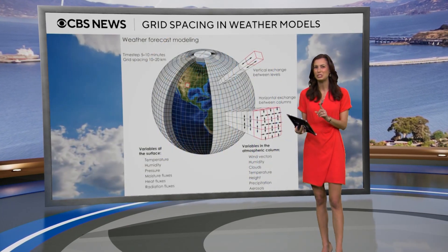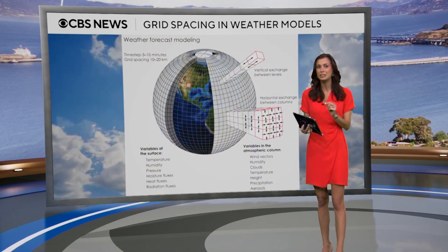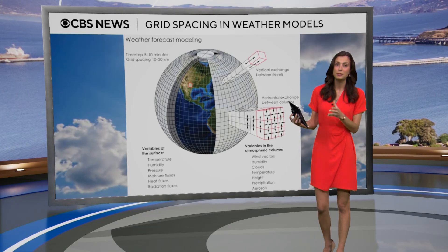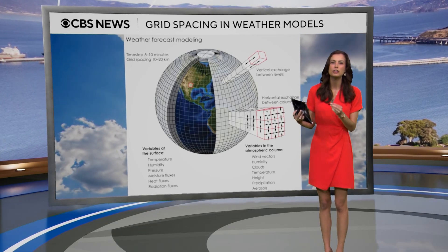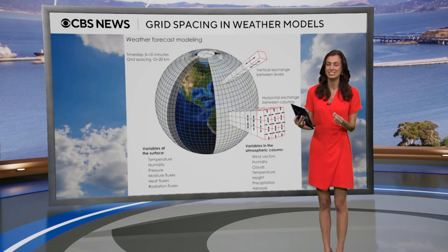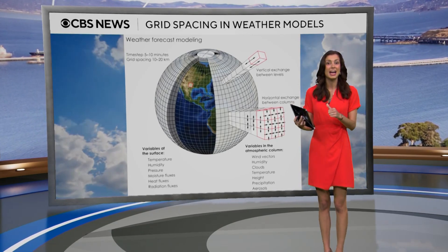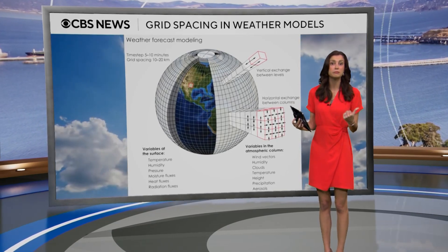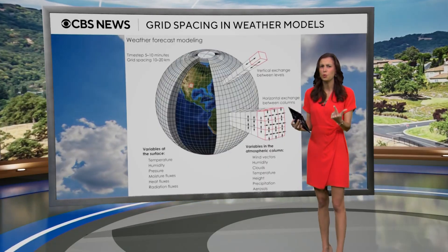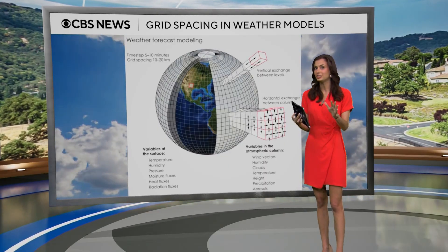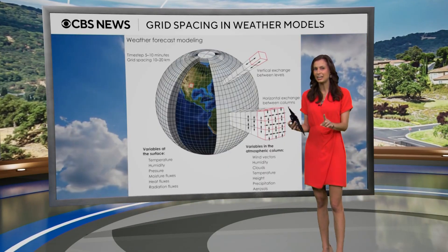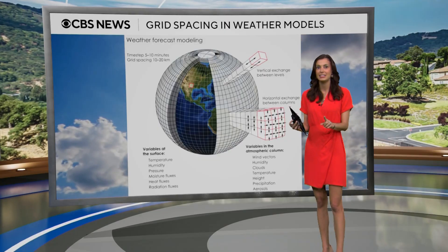First and foremost, you have to think of the Earth as a grid. Models take hundreds of thousands of equations and input all of the different parts of the atmosphere — like heat, moisture, wind, just to name a few; there is a lot more — for one section of the grid.